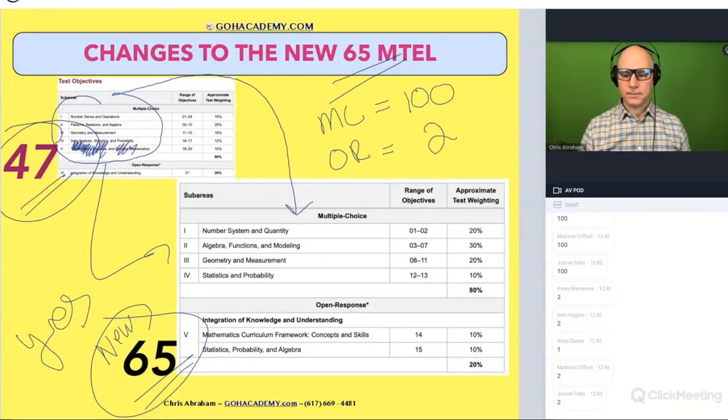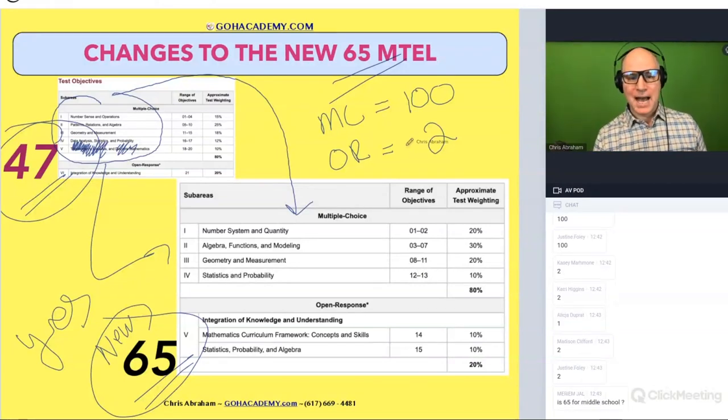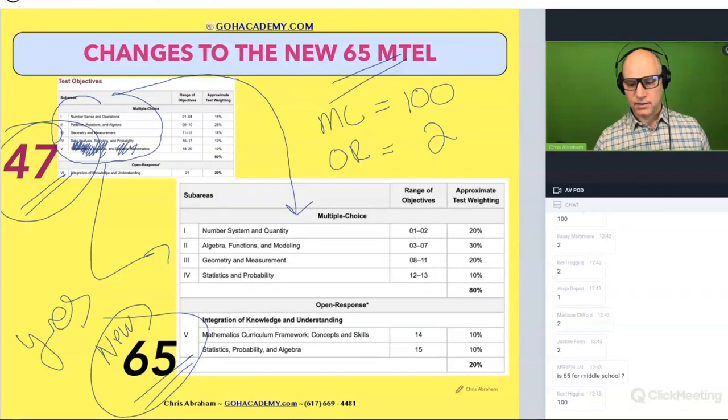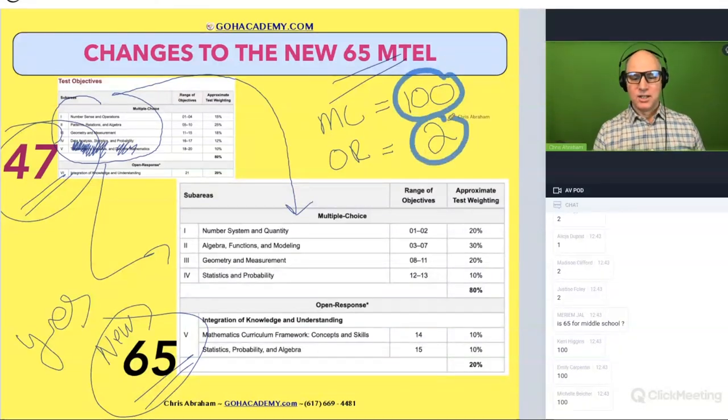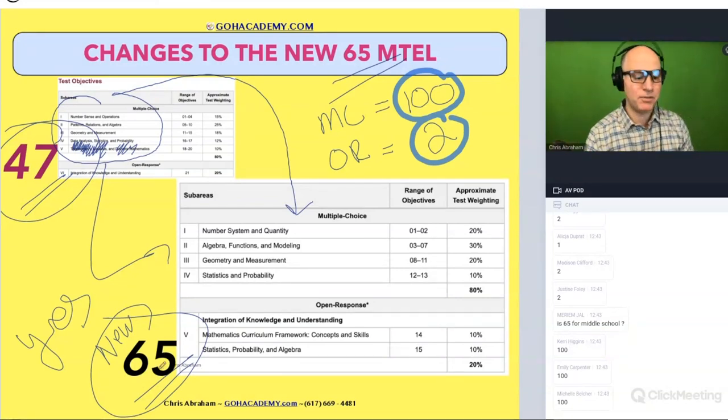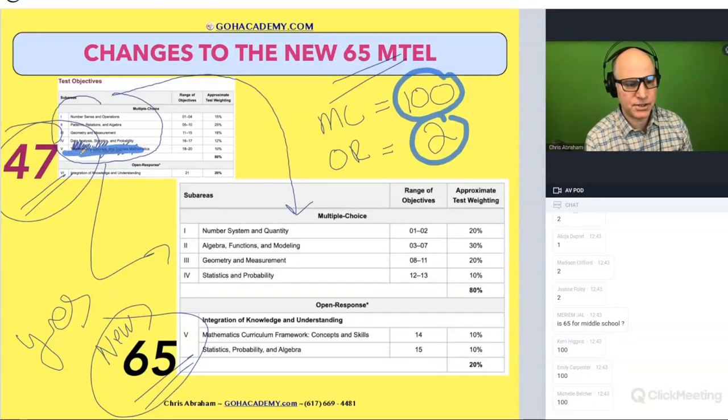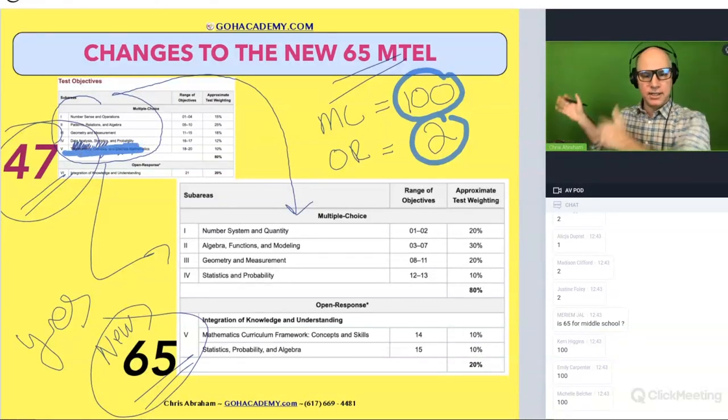Two, right? And when the 65 first came out, how many multiple choice did it have? When the 65 first came out, it had originally 100 and two essays. So there wasn't—so that was, you know, they did simplify it. They did get rid of some stuff, but it still had 100 questions and two essays.